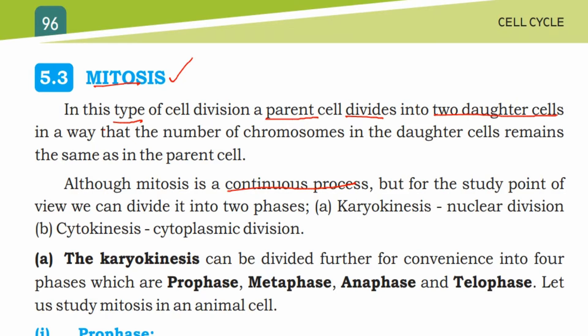for the study point of view, we can divide mitosis into two phases. One is karyokinesis, which means nuclear division, and the other is cytokinesis, which is the cytoplasmic division. Karyokinesis can be divided further, more conveniently, into four phases.